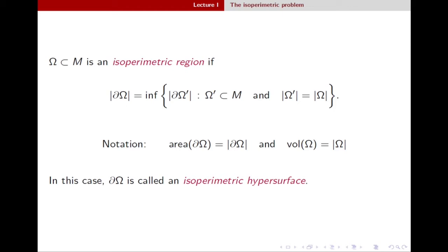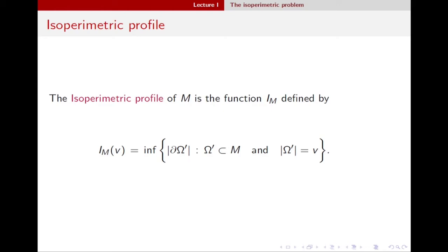I'm going to work with sets of finite perimeter, using a light notation for surface area and volume. Essentially, among all regions omega-prime with a fixed volume, we want to minimize the surface area. A minimizer for this problem is called an isoperimetric region, and the boundary is called an isoperimetric hypersurface. If you solve this problem for all volumes, you can construct the isoperimetric profile — a function that associates to each volume the area of the corresponding isoperimetric hypersurface.